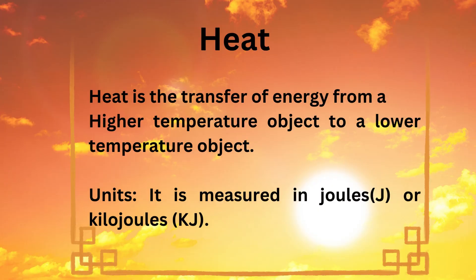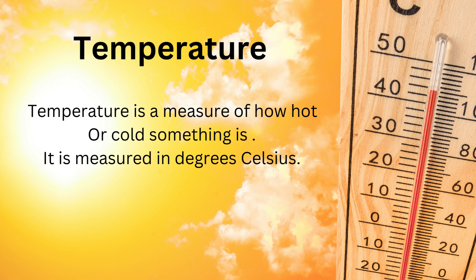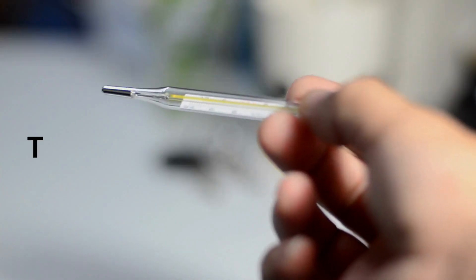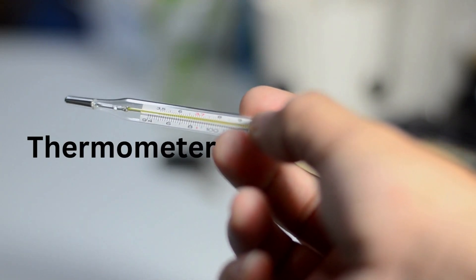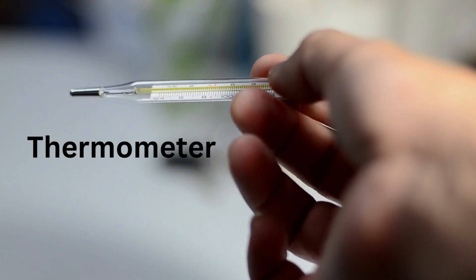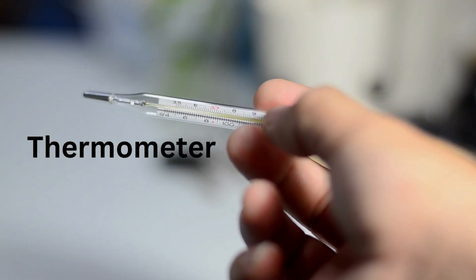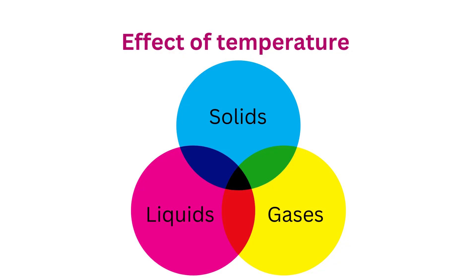Heat is measured in units called joules or kilojoules. Now, what is temperature? Temperature is a measure of how hot or cold something is. It is measured in degrees Celsius and can be measured using an instrument called a thermometer.